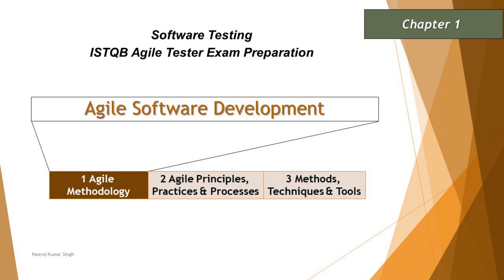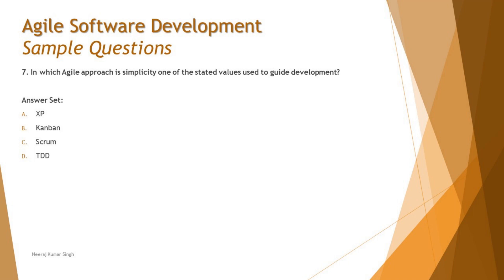Today we shall continue with our journey of discussions on sample questions. The next question is Question Number Seven: In which agile approach is simplicity one of the stated values used by the guide development?